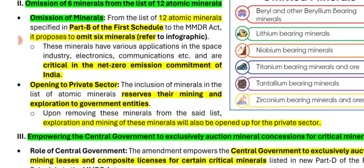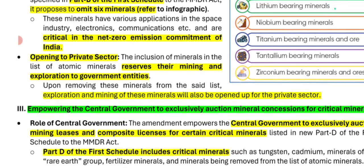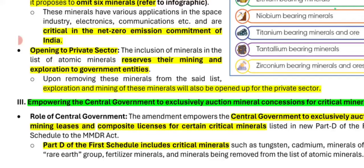By including minerals in the 12 atomic minerals list, mining and exploration were reserved for government entities only. After removing these 6 minerals, exploration and mining are now opened for the private sector as well. So these 6 minerals can be explored by private entities, but the remaining atomic minerals can only be worked on by government entities.